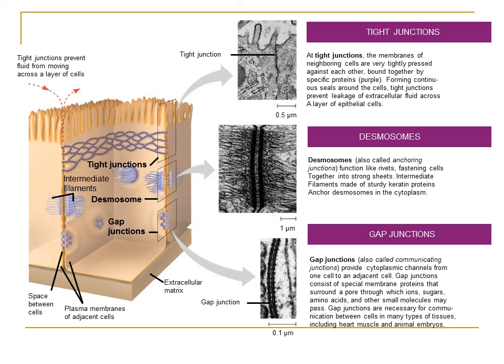Finally, we have gap junctions, shown at the very bottom of this illustration. They remind me of the plasmodesmata we saw in plant cells. Basically they're just little channels that travel between adjacent cells, allowing substances to move between cells that exist in close proximity.